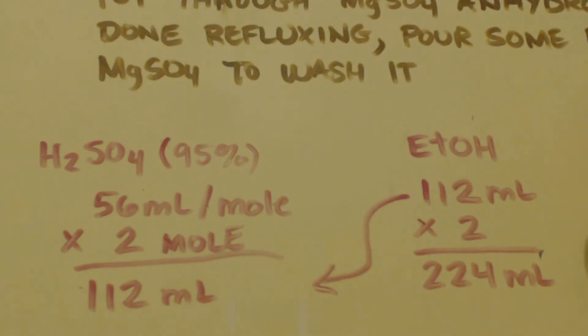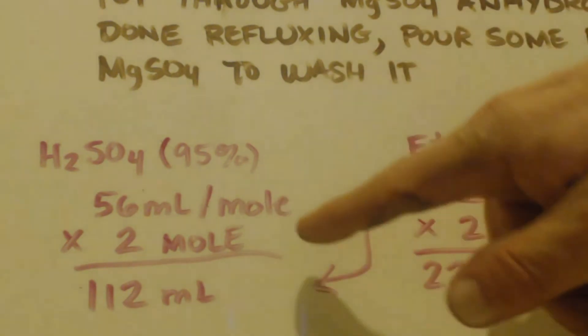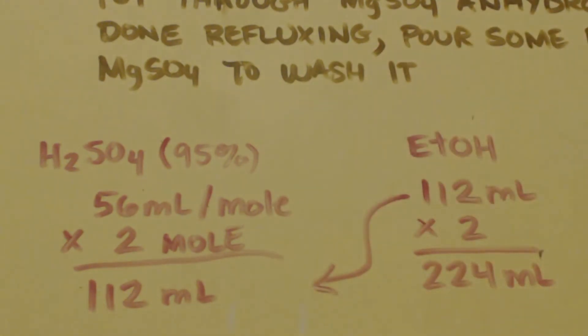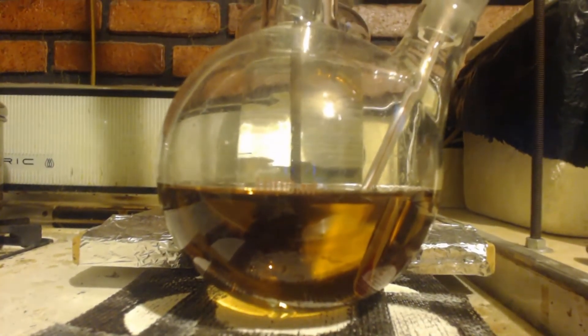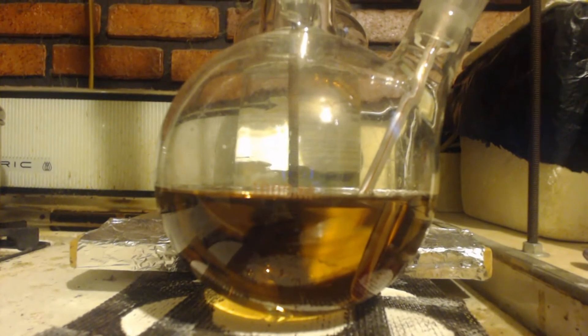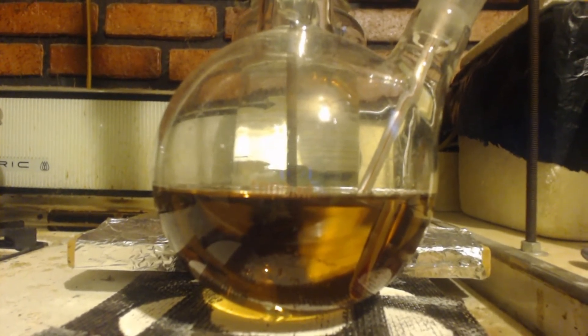So I times that by two because I want to put two moles in. That's 112 milliliters. So that's how I picked my sulfuric acid. Now, the ethanol, and the reason why I did that is because I want it to be two moles. So it's easy to figure out my yield and stuff like that.